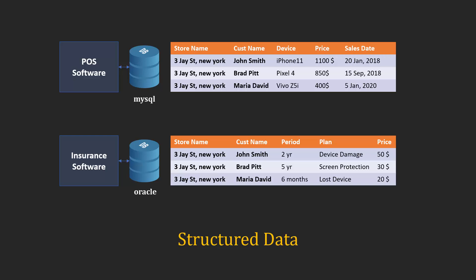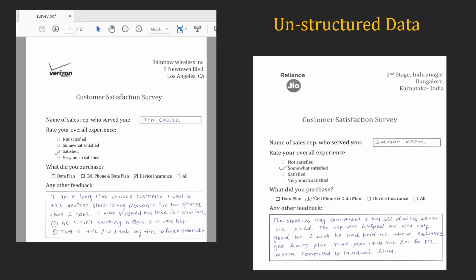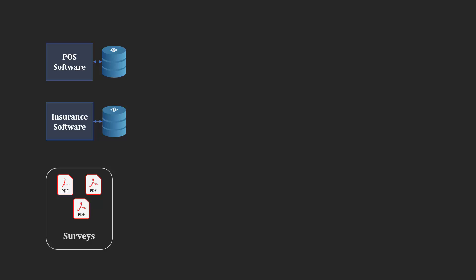To track the insurance claims, you might have insurance software which will have insurance-related records in it. These two could be different systems with different databases — for example, your POS might have a MySQL database whereas your insurance system might have Oracle. Other than that, you might have unstructured data; for example, you are running a customer satisfaction survey where you are scanning those survey papers and storing them as PDFs on your Amazon S3 cloud.